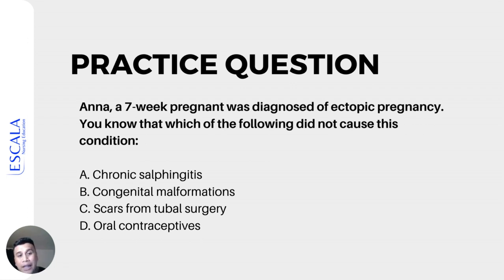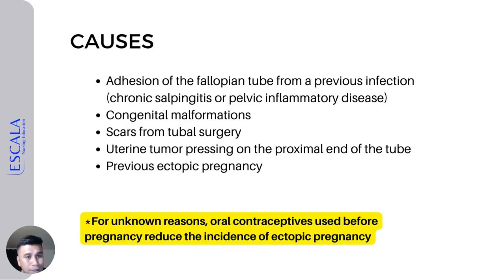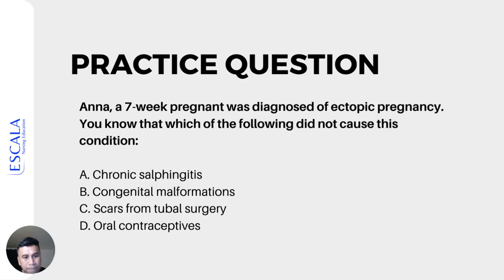Here is a practice question: Anna, a seven-week pregnant woman, was diagnosed with ectopic pregnancy. Which of the following did NOT cause this condition? A — chronic salpingitis, B — congenital malformations, C — scars from tubal surgery, D — oral contraceptives. Going back to our causes: adhesions is true, congenital malformations is true, scars are true, uterine tumor is true — except oral contraceptives. The correct answer is letter D, oral contraceptives.